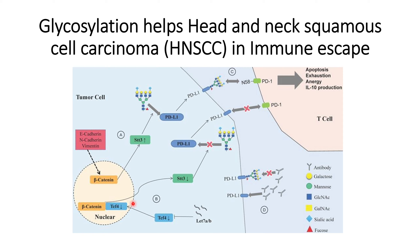In HNSCC tumor cells, upregulation of E-cadherin leads to upregulation of beta-catenin, which causes upregulation of the enzyme STT3. This promotes glycosylation of the PD-L1 ligand, which is then expressed on the tumor cell surface. This glycosylated PD-L1 ligand interacts with PD-1 receptors on T cells, contributing to immune suppression.